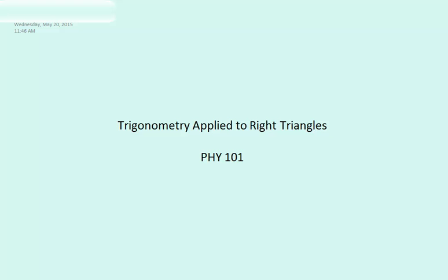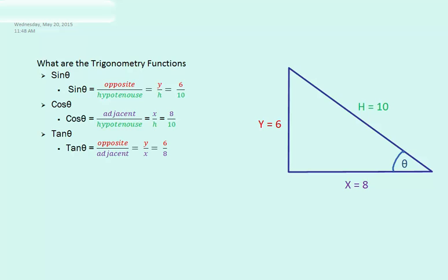Today we will apply our knowledge of trigonometry to right triangles. Trigonometry has three common functions that can be applied to right triangles. They are sine theta. Sine theta is opposite over hypotenuse.